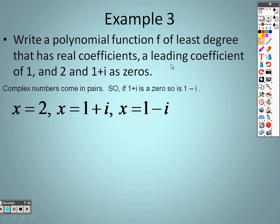So when we're saying what the zeros are, we're saying that x equals 2, x also equals 1+i, but remember it also equals 1-i. So we have 1, 2, 3 answers that we know of right now.